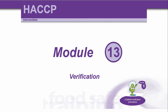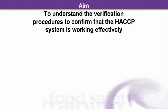Module 13 of the Hassad Intermediate Course is Verification, which is Principle 6 in HACCP: to establish verification procedures. The aim of this unit is to understand the verification procedures to confirm that the HACCP system is working effectively.